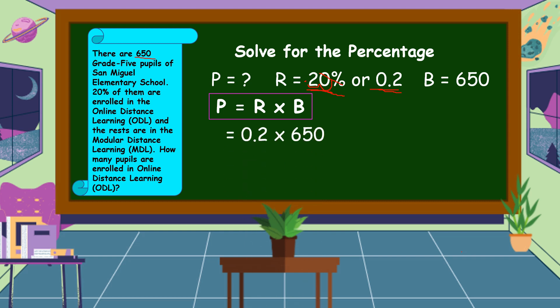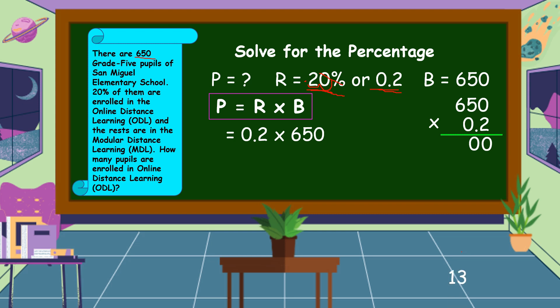So, 2 tenths times 650. Let's multiply 650 times 2 tenths. 2 times 0 is equal to 0. 2 times 5 is equal to 10 — write 0, regroup 1. 2 times 6 is equal to 12, plus 1 is equal to 13.